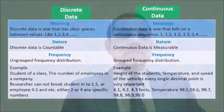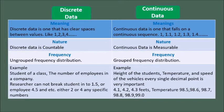Point number three: difference between discrete data and continuous data. Meaning — discrete data has clear space between values, like one, two, three, four, and so on. Continuous data falls on a continuous sequence, like one, 1.1, 1.2, 1.3, 1.4, and so on.